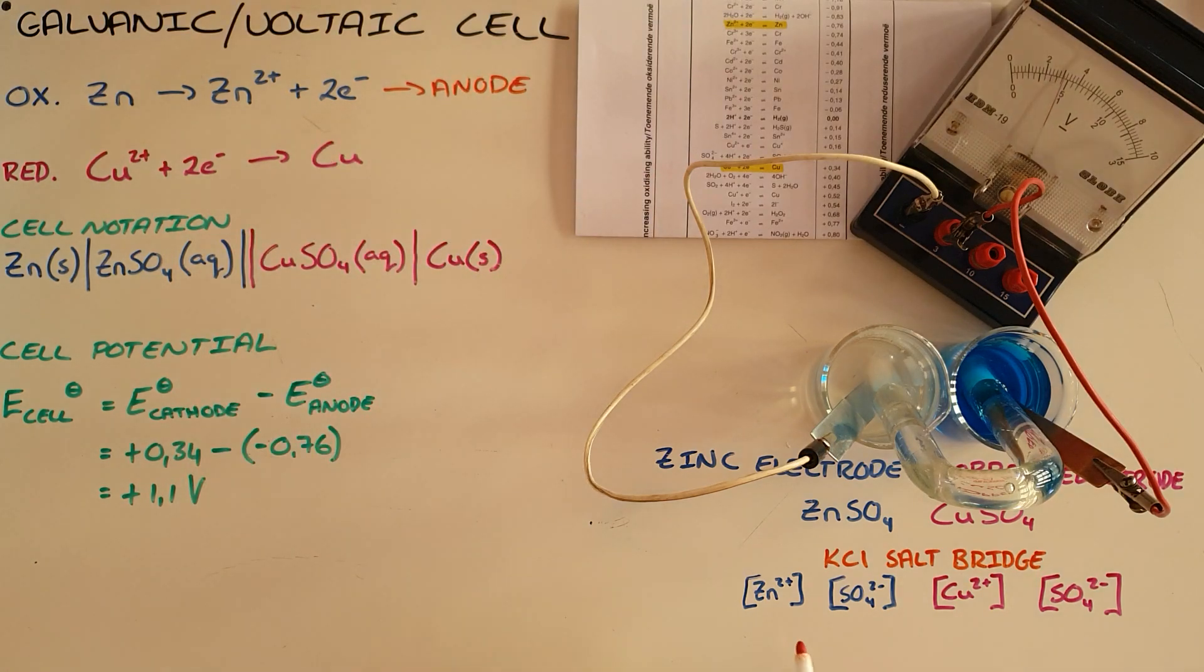So the zinc is now the anode. And what we can see is that the zinc solid is busy being oxidized and going into solution, which means that our concentration of zinc ions increases in this beaker over here. At the same time, initially, the concentration of sulfate ions remains constant.